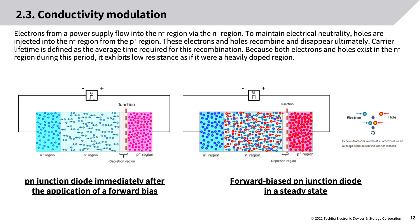Electrons from a power supply flow into the N− region via the N+ region. To maintain electrical neutrality, holes are injected into the N− region from the P+ region. These electrons and holes recombine and disappear ultimately. Carrier lifetime is defined as the average time required for this recombination. Because both electrons and holes exist in the N− region during this period, it exhibits low resistance as if it were a heavily doped region.